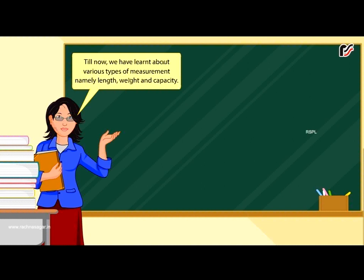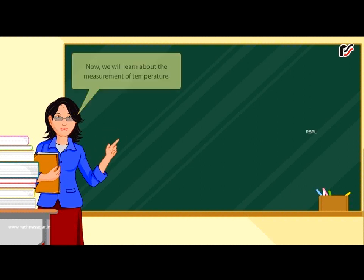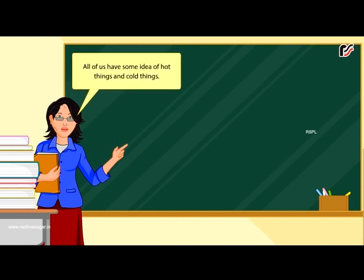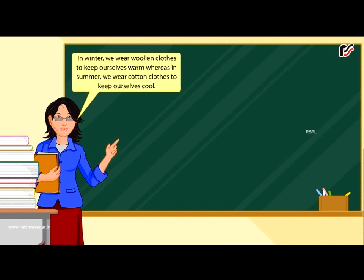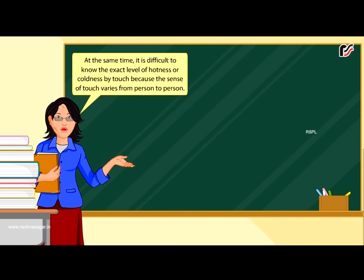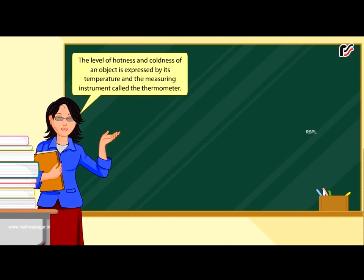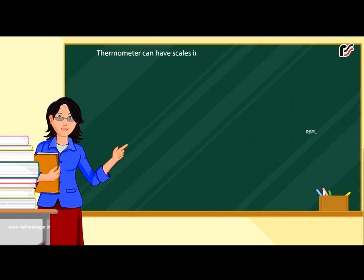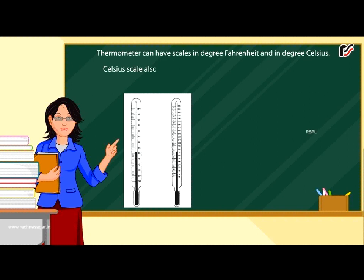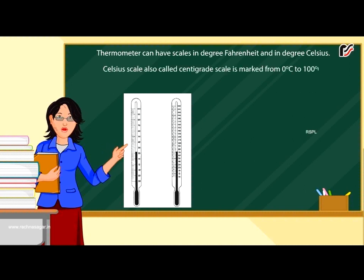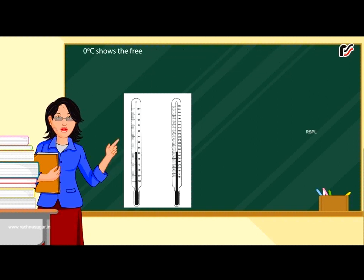Temperature. Till now we have learned about various types of measurement: length, weight, and capacity. Now we will learn about the measurement of temperature. All of us have some idea of hot and cold things — in winter we wear woolen clothes to keep warm, whereas in summer we wear cotton clothes to keep cool. It is difficult to know the exact level of hotness or coldness by touch because the sense of touch varies from person to person. The level of hotness and coldness of an object is expressed by its temperature, measured using an instrument called the thermometer. Thermometers can have scales in degree Fahrenheit or degree Celsius. The Celsius scale is marked from zero degrees Celsius to one hundred degrees Celsius, where zero degrees Celsius shows the freezing point of water and one hundred degrees Celsius shows the boiling point of water.